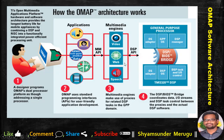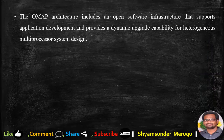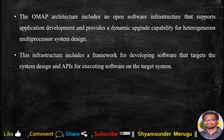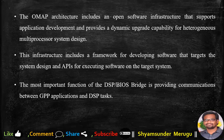Multimedia engines make use of proxies for related DSP tasks in the general-purpose processor domain. The DSP Bridge coordinates data, input-output streams, and DSP task control between the proxies and the actual DSP software. The OMAP architecture includes an open software infrastructure that supports application development and provides a dynamic upgrade capability for heterogeneous multi-processor system design. This infrastructure includes a framework for developing software targeting the system design and APIs for executing software on the target system. The most important function of DSP Bridge is providing communications between the general-purpose processor applications and digital signal processor tasks.